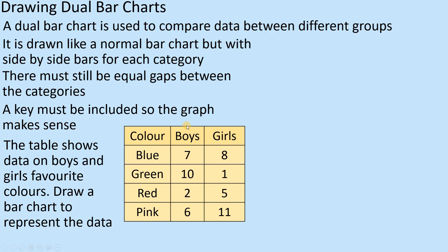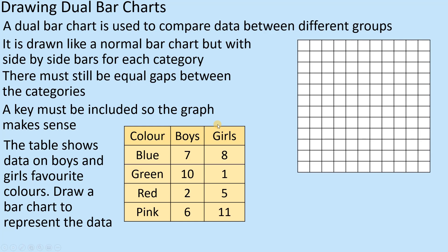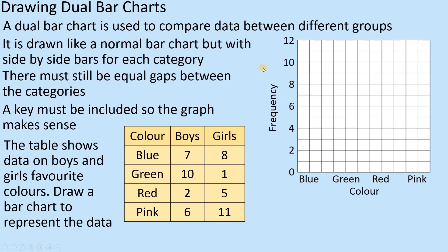In terms of the chart, like any bar chart, we need to have all the key parts clearly labelled. Frequency goes on the left-hand side, and our variable - which is the colours - goes along the bottom. Because we've got two different groups, we're going to have two bars for each category: blue, green, red and pink. If you've looked at our bar charts video, you'll see very much the same kind of idea.